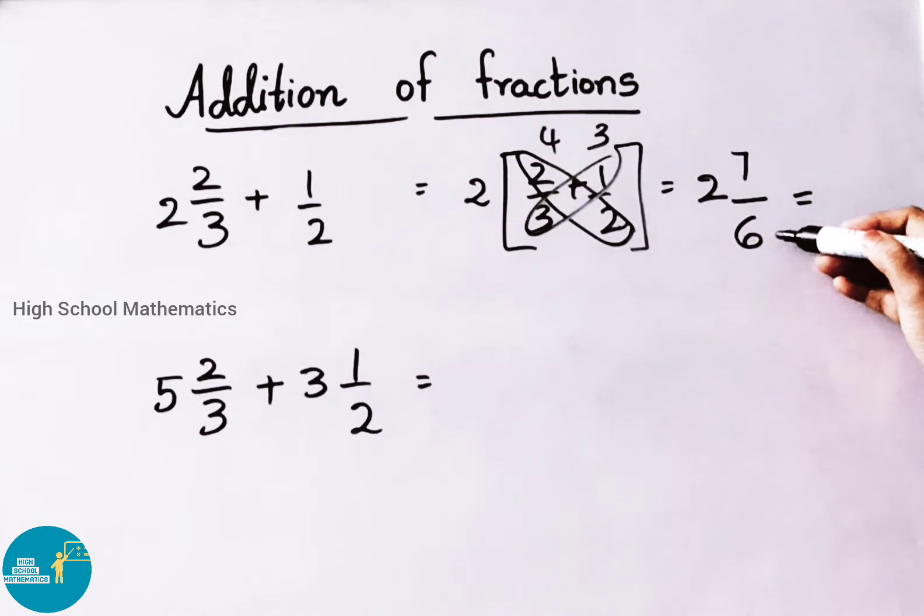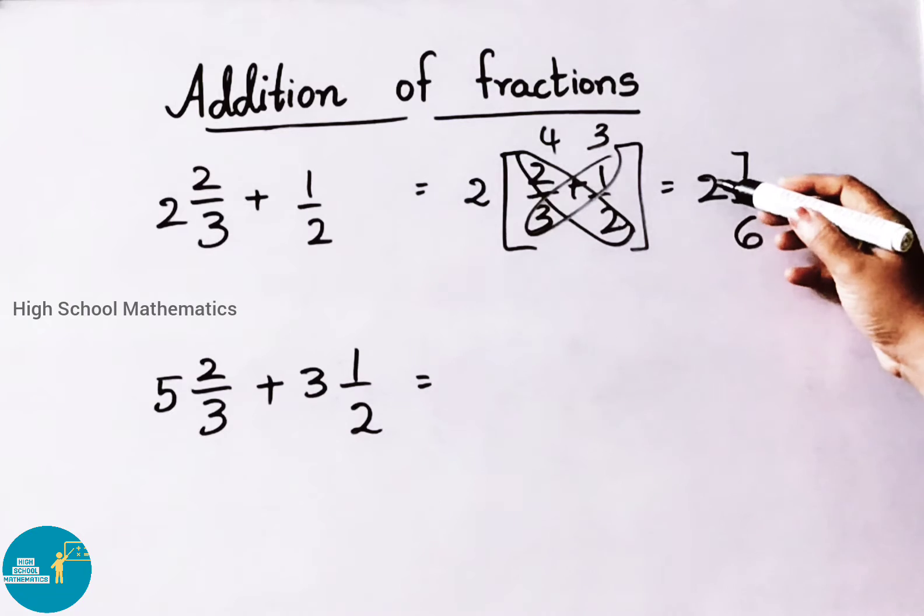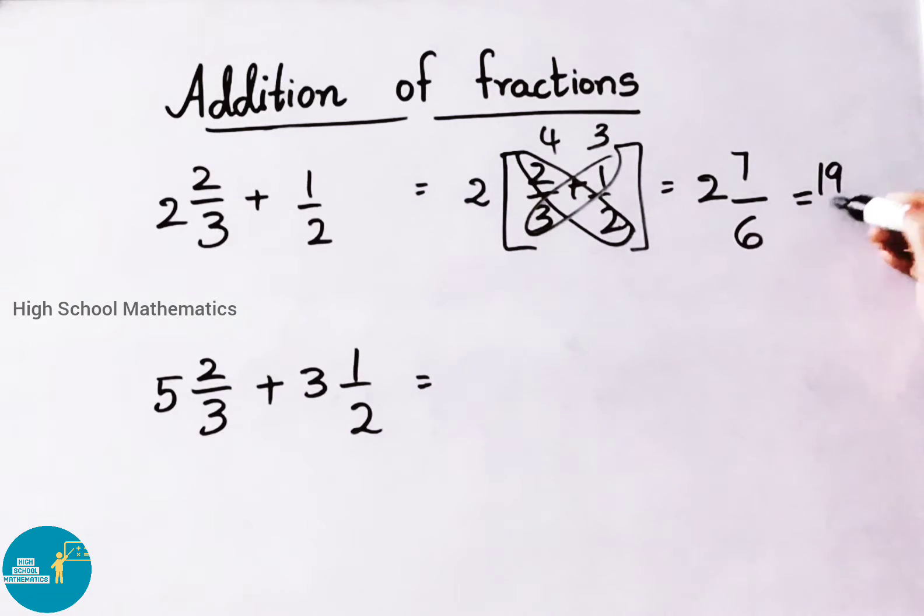We can convert this mixed fraction to improper. 6 times 2 is 12. 12 plus 7, 19 by 6. So the answer is 19 by 6.